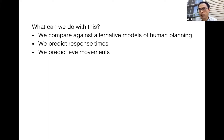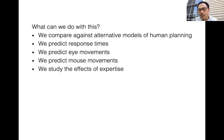We predict mouse movements — people tend to hover their mouse over where they're thinking of moving. We also study the effects of expertise, a classic question in psychology: what really changes when you get better at something? With this task and model in hand, we can characterize what is actually getting better.